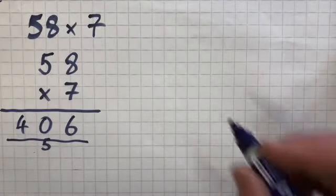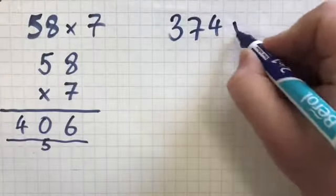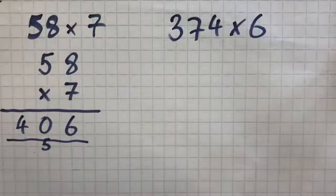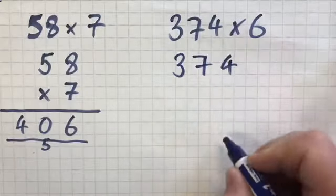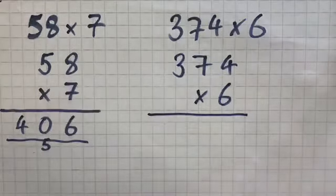Now I'm going to look at a more complicated one with 3 digits in the number we're multiplying. So we're going to do 374 multiplied by 6. Again we present this as 374 and we put the multiplied by 6 on the line underneath.